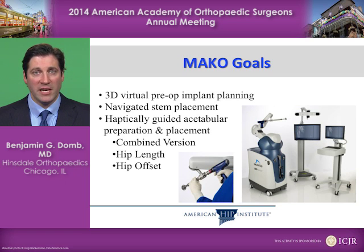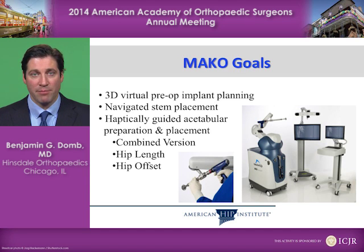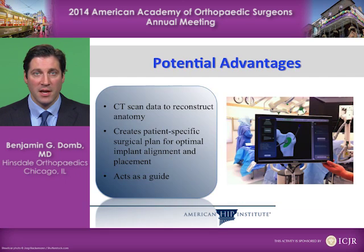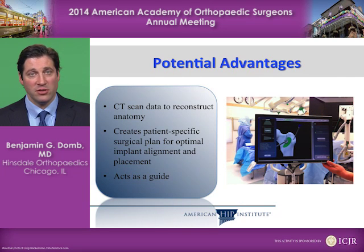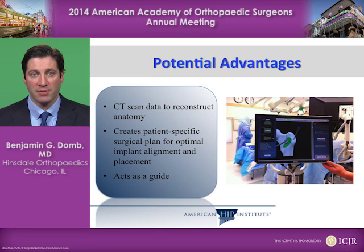The robotic system uses a 3D virtual pre-op implant planning system, a navigated stem placement, and haptically guided acetabular preparation and placement. It allows us to assess combined version, hip length, and hip offset. Potential advantages include the use of CT scan data to create a virtual model of the patient and a patient-specific surgical plan for optimal implant alignment and placement.